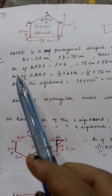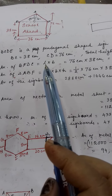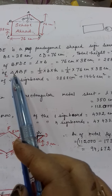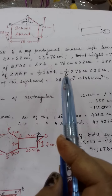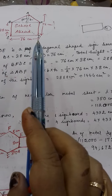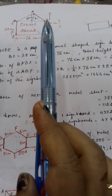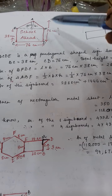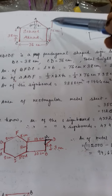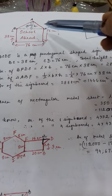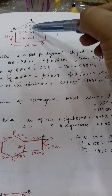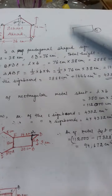Now to find the area of rectangle BFDC, it is length times breadth — length and breadth are both given, so you find out the area. Next, find the area of triangle ABF using the formula half times base times height. The base BF is 76 cm. For the height of the triangle: total height is 76 cm minus BC which is 38 cm, giving triangle height as 38 cm.